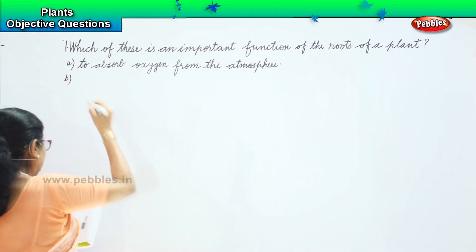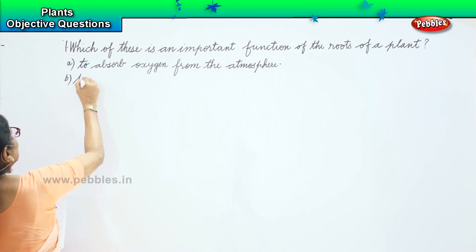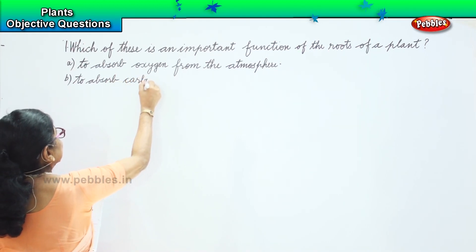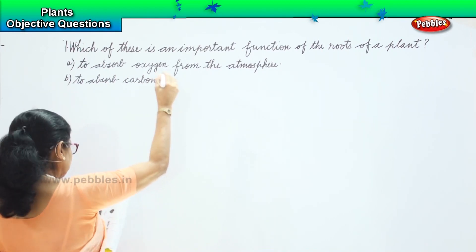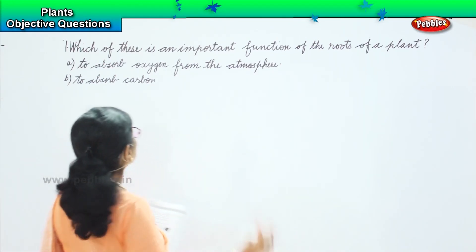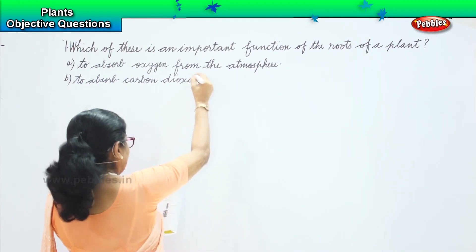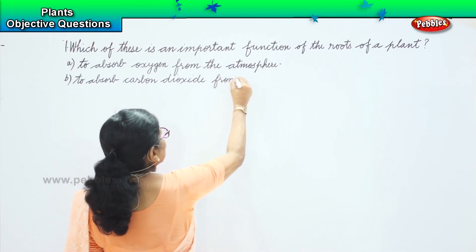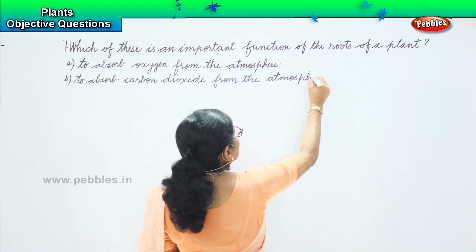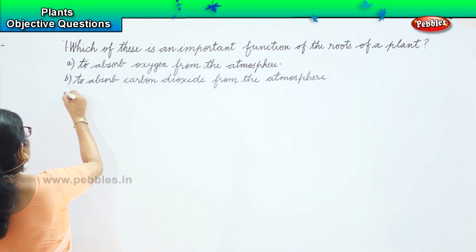Option B is to absorb carbon dioxide from the atmosphere.